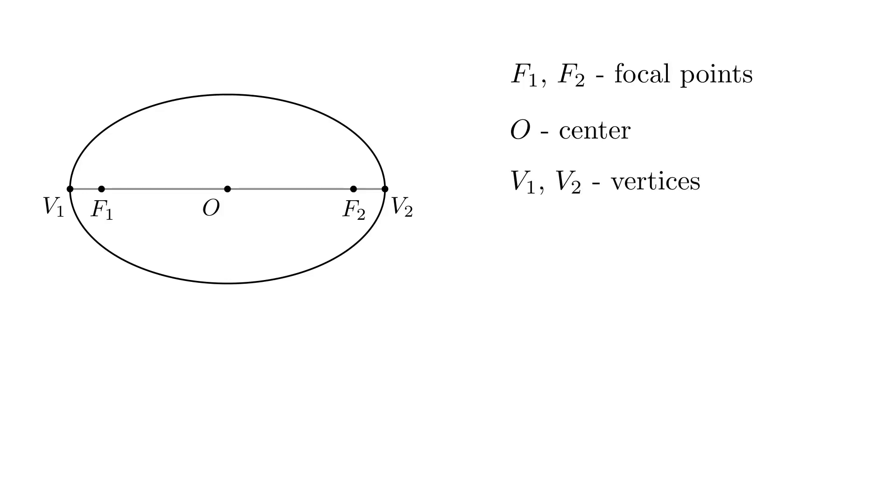The perpendicular bisector of F1, F2 also intersects the ellipse at two points V3 and V4 and we call them the co-vertices of the ellipse.